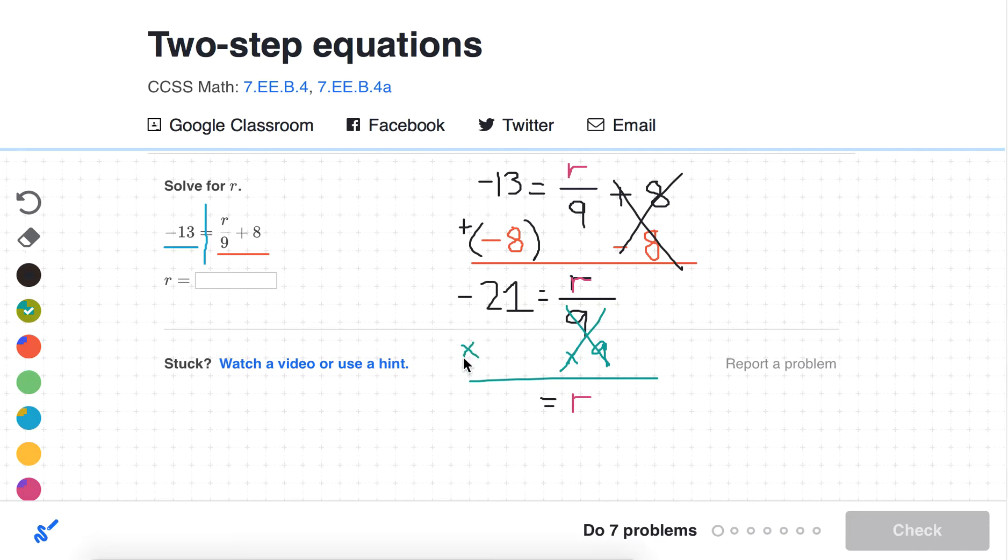Whenever you do something to one side of the equation, you have to do it to the other side to preserve the balance. So over here, we have negative 21 times 9, and that's going to be negative 189.